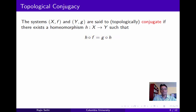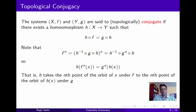Recall that a homeomorphism is just a continuous bijection that has a continuous inverse. Now if there exists such a homeomorphism h, then the n-th iterate of f can be expressed as h inverse composed with the n-th iterate of g, composed with h. From this you can immediately deduce that h takes the n-th point of the orbit of x under f to the n-th point of the orbit of h(x) under g. So the homeomorphism h, and its inverse, allows us to move back and forth between trajectories in these two dynamical systems.